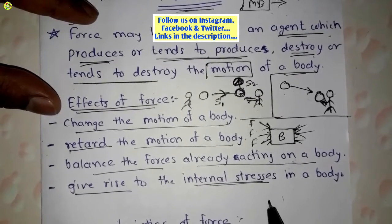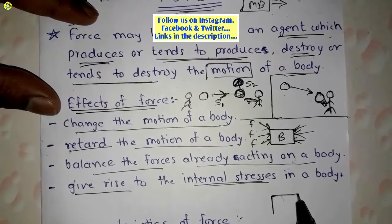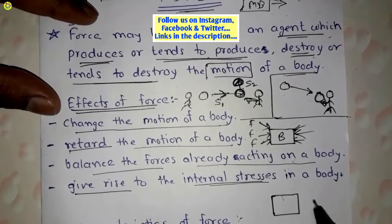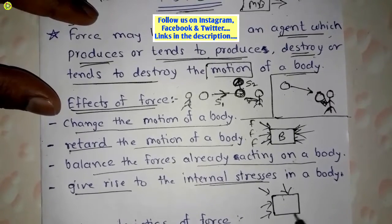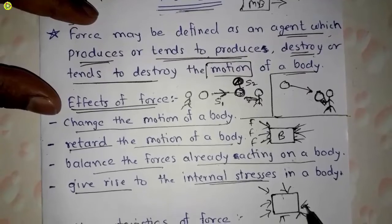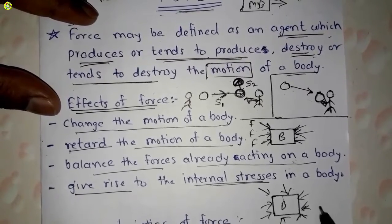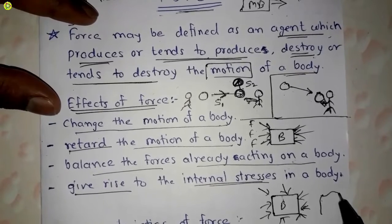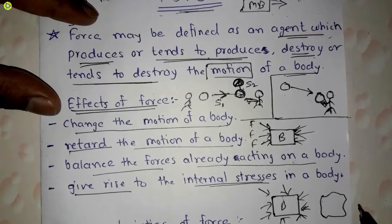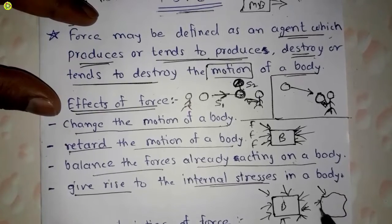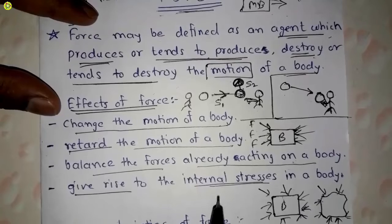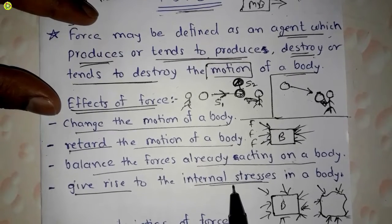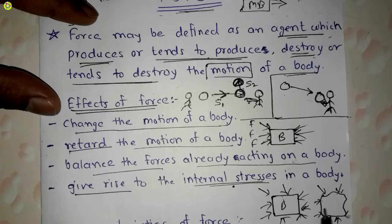The fourth effect is: give rise to internal stresses in the body. Suppose this is the initial shape of a body. Due to the application of forces acting on this body, there is a change in the shape of the body due to the generation of internal stresses. This is the deformed body — due to forces there are internal stresses, and due to internal stresses deformation of the body occurs.